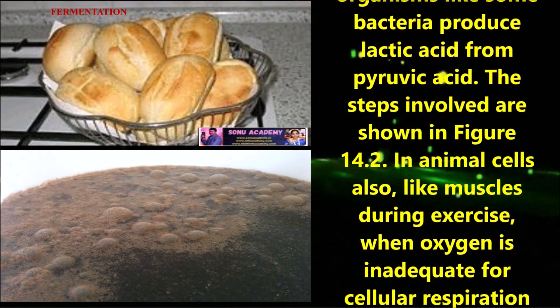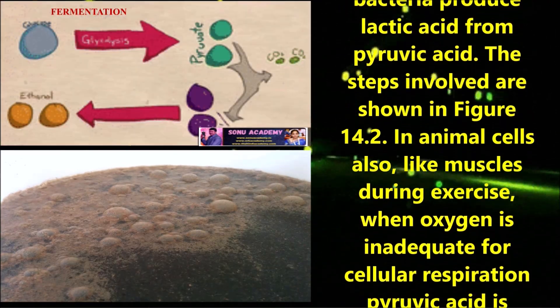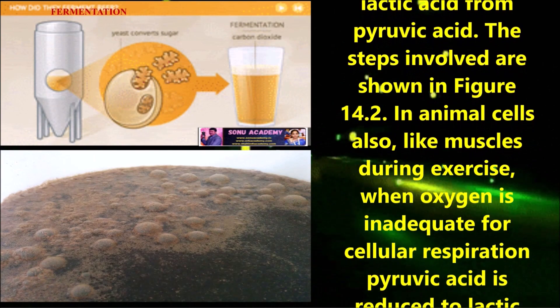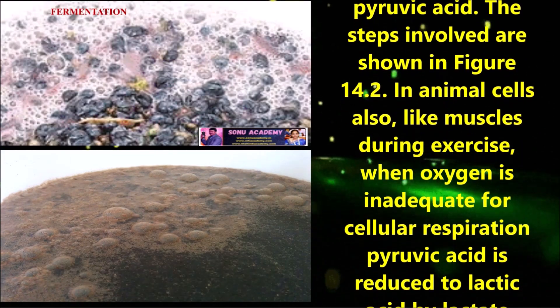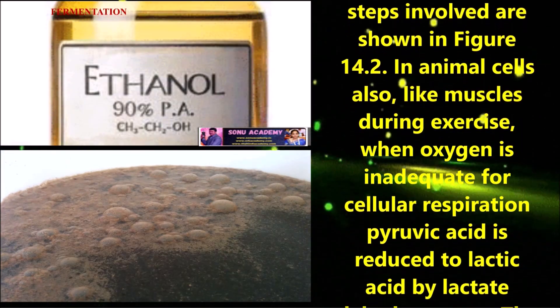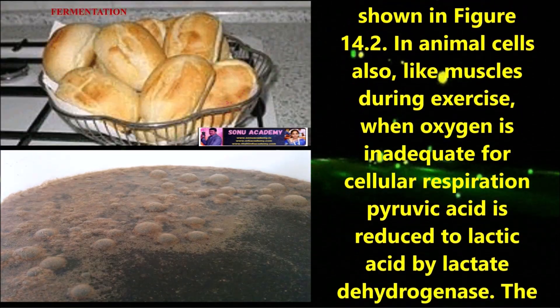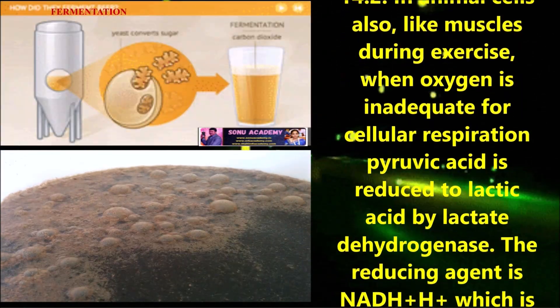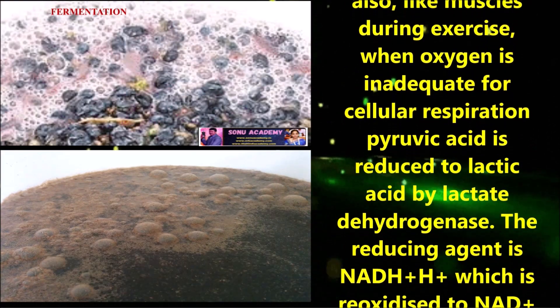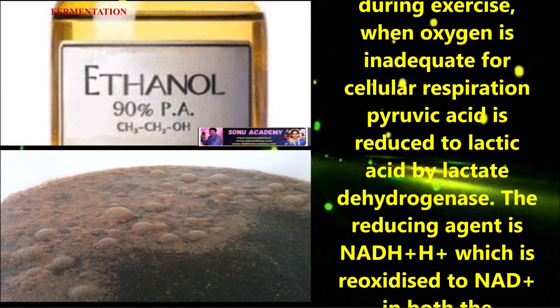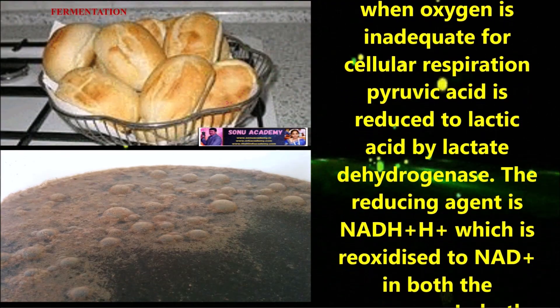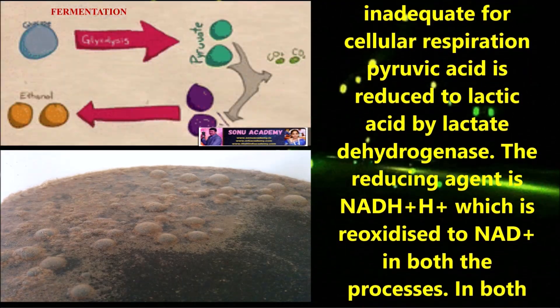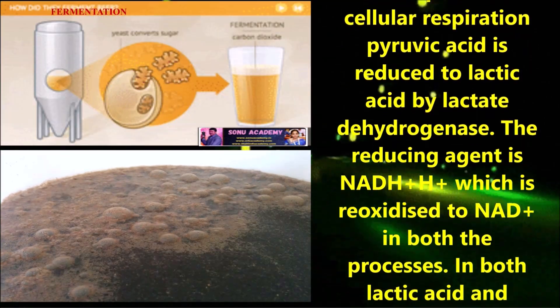In animal cells, also like muscles, during exercise when oxygen is inadequate for cellular respiration, pyruvic acid is reduced to lactic acid by lactate dehydrogenase.